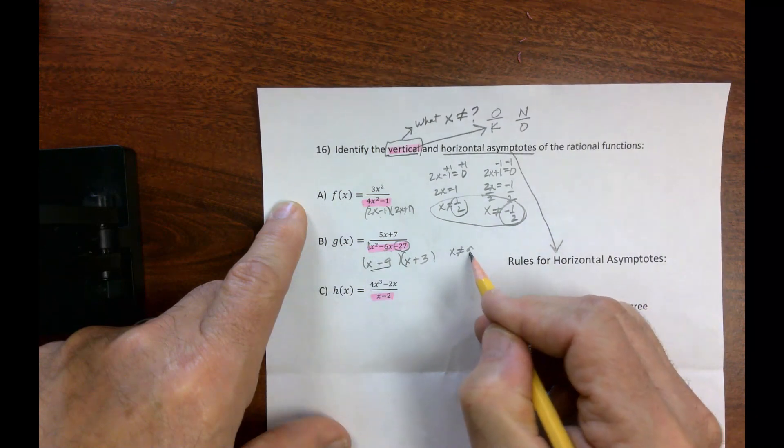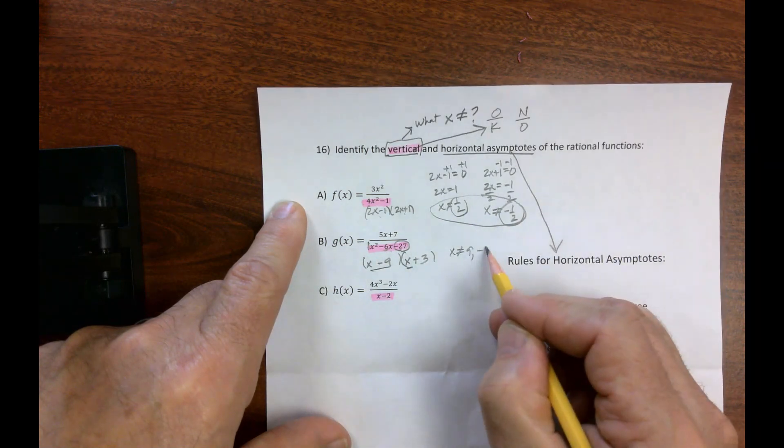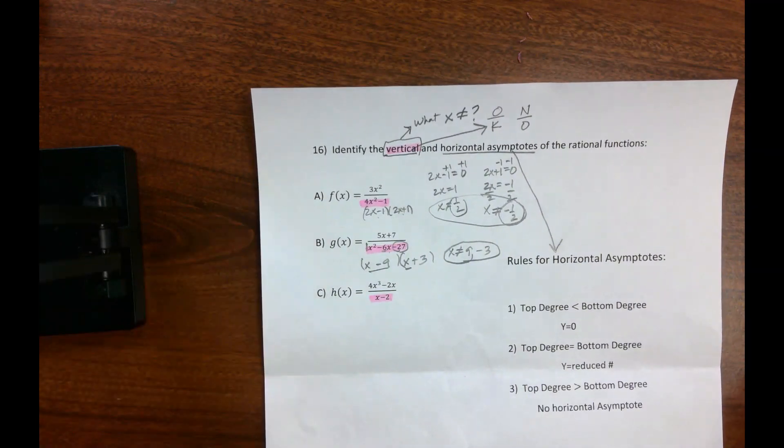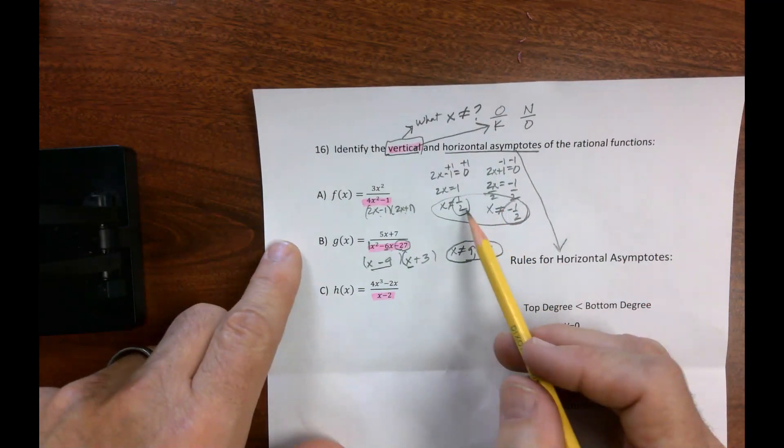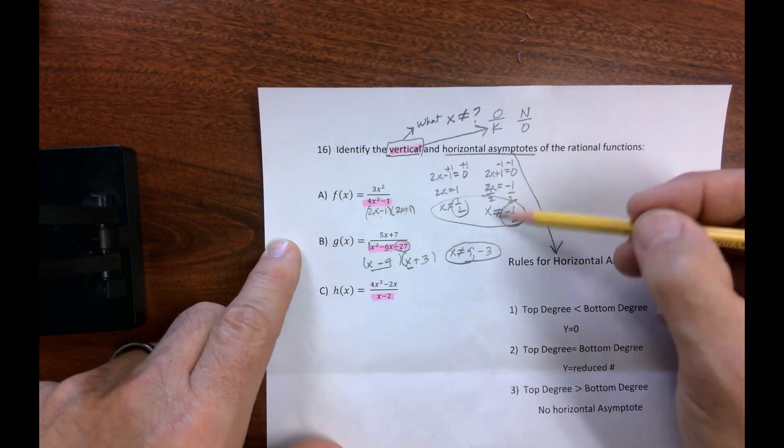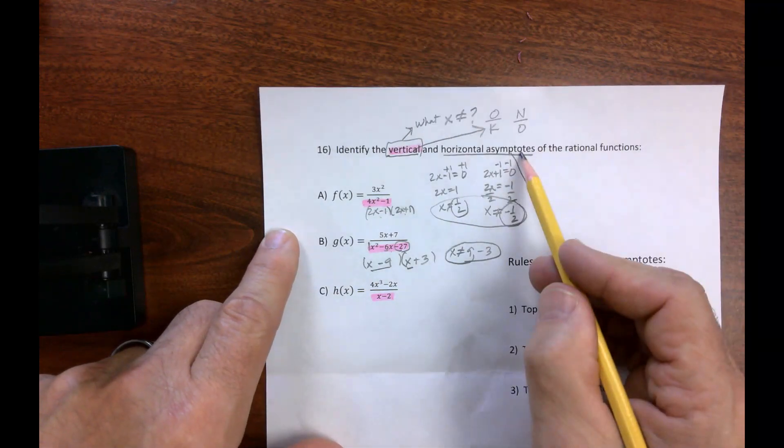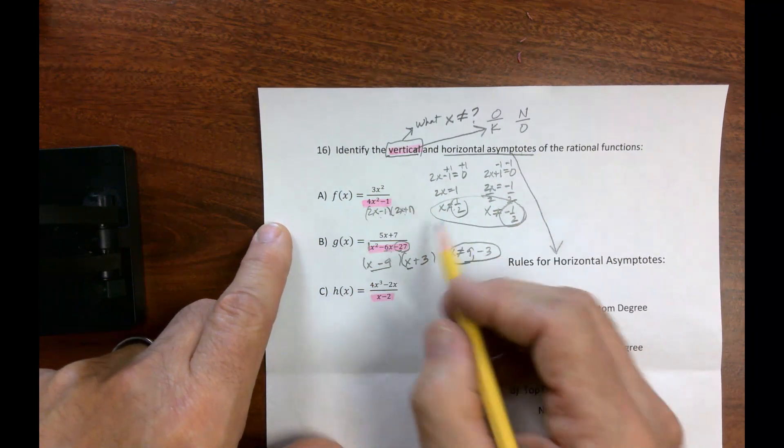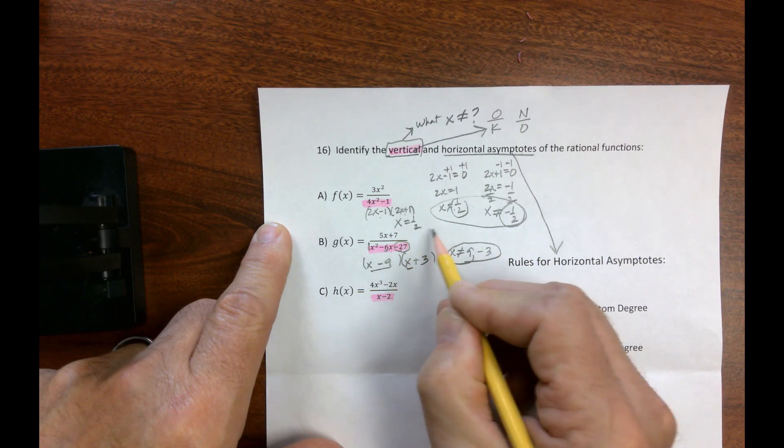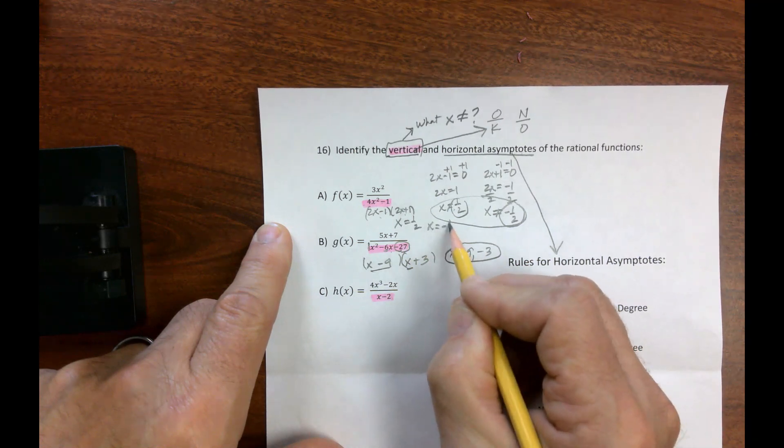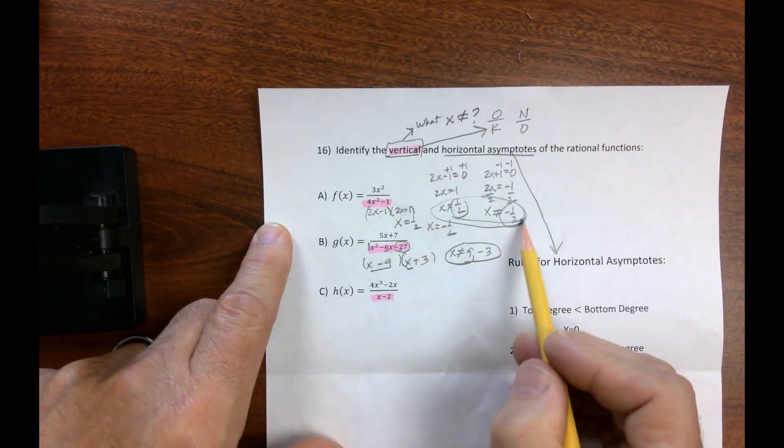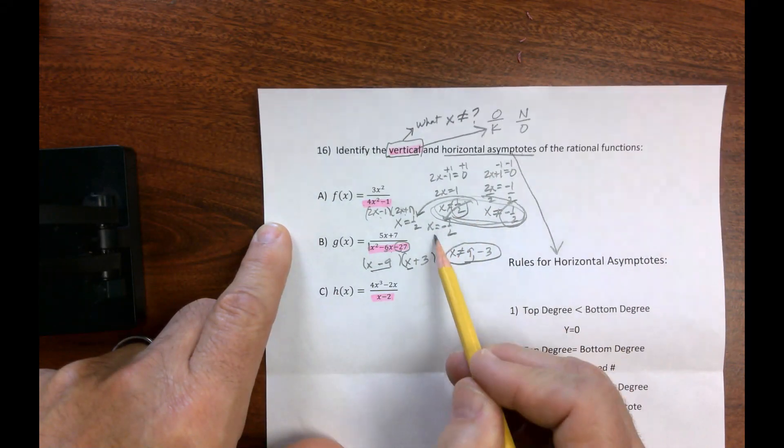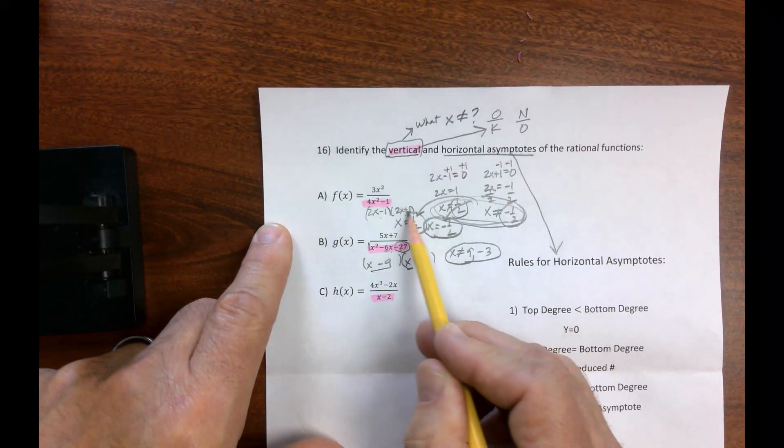x can't equal 9 or negative 3. And there's my vertical, this is what x can't be, so I guess I misspoke up here a little earlier. They want the asymptotes, so the asymptotes, if we were to graph this, we would find they'd be x equals 1 half, and x equals negative 1 half. So I was talking domain, but that's what helps us find the actual asymptotes. So this would be my answer, this would be my answer.